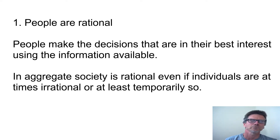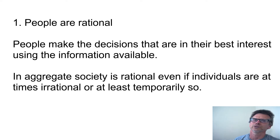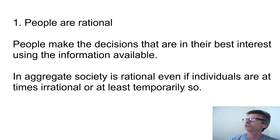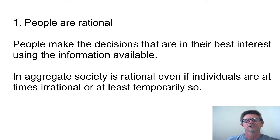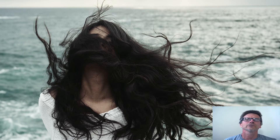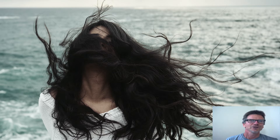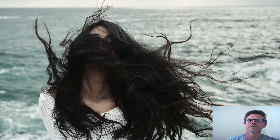Sometimes we assume information is perfect, and in economics we also look at imperfect information. In aggregate, society is rational even if individuals are irrational at times or temporarily so. I mean, who hasn't been in a relationship where the person says, 'you're insane, you're crazy, you have a problem'? And if you haven't had that swung at you, then you haven't been in a relationship.